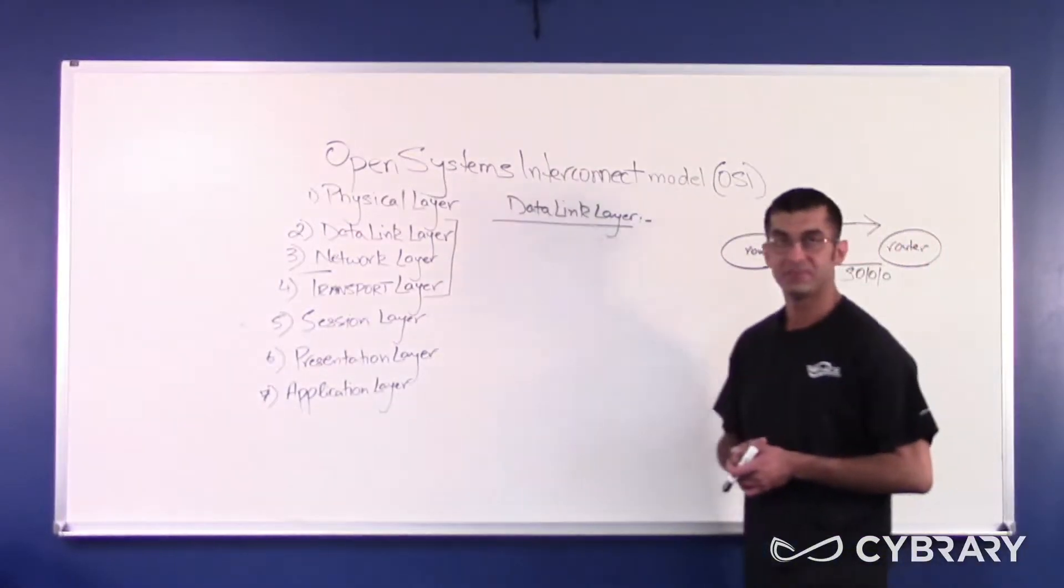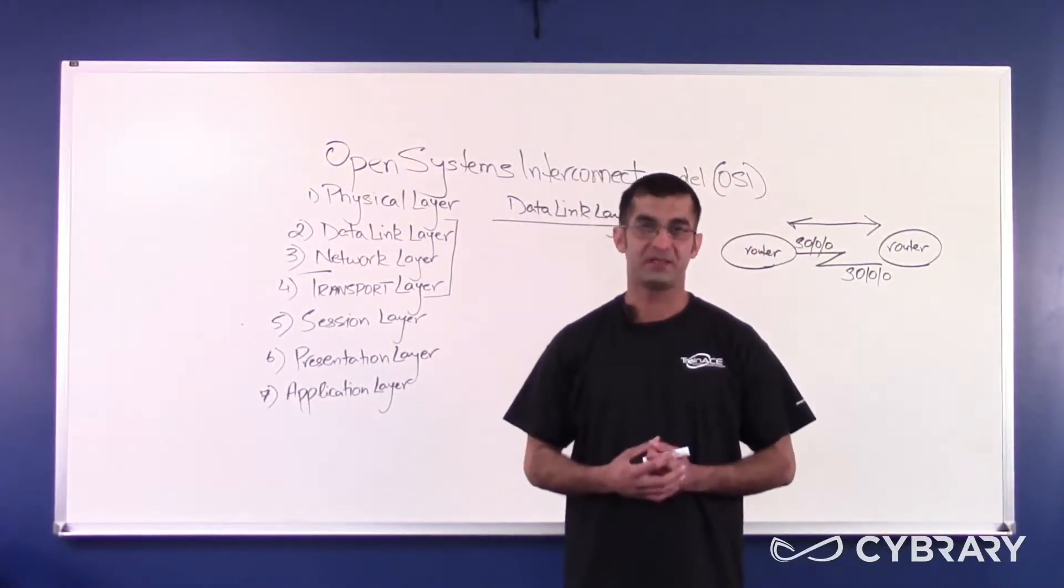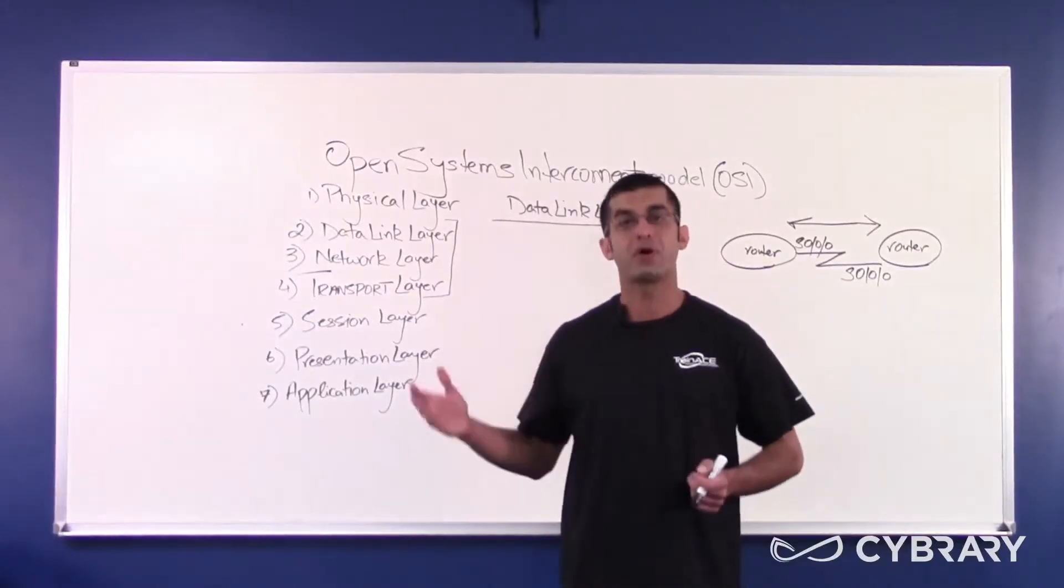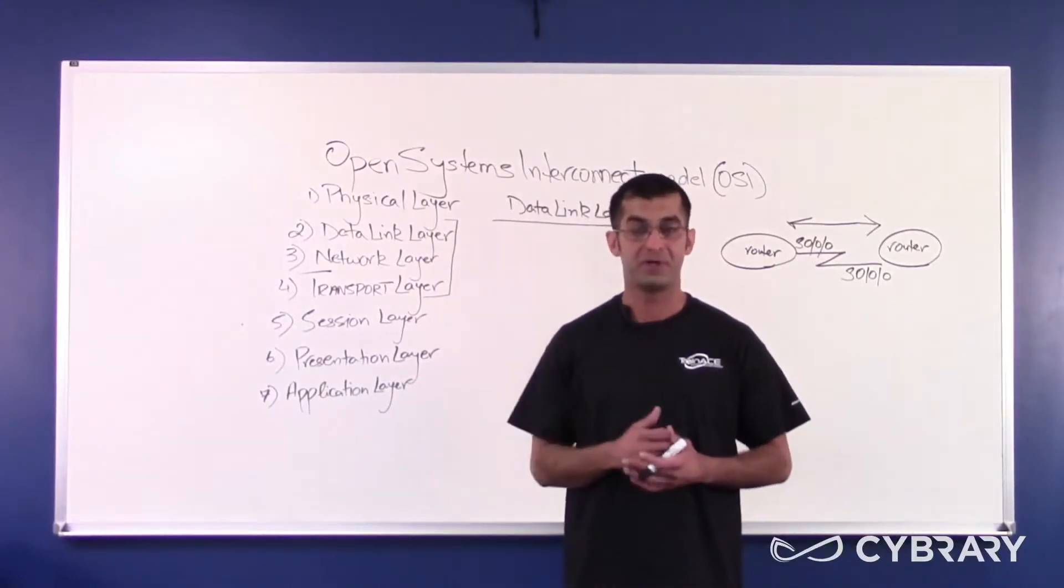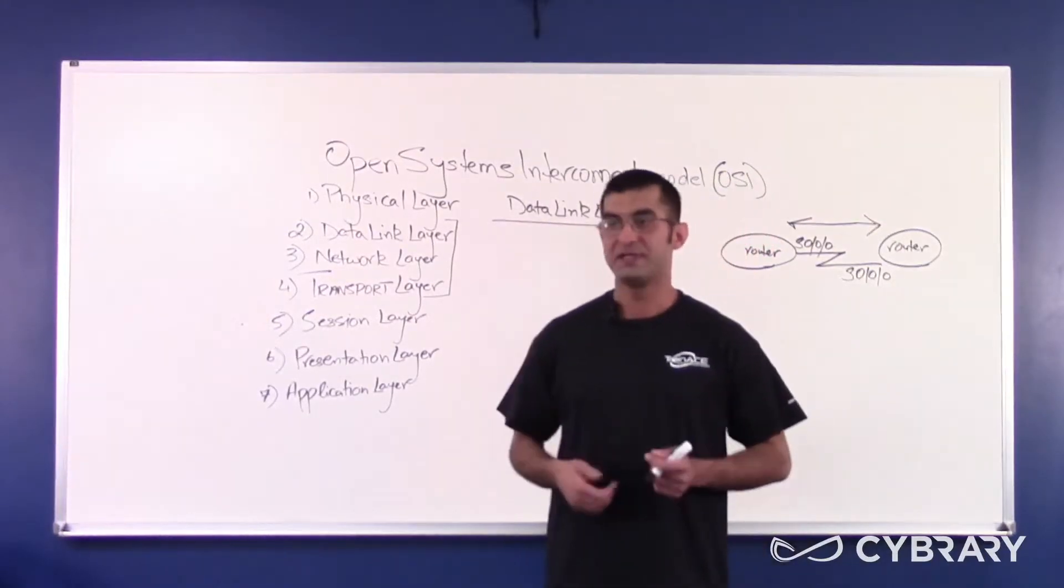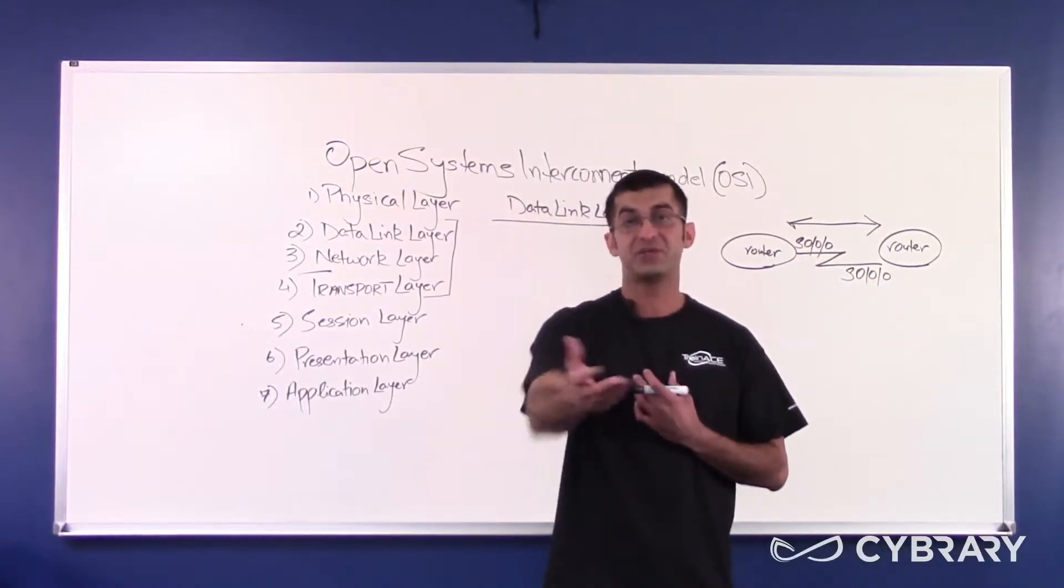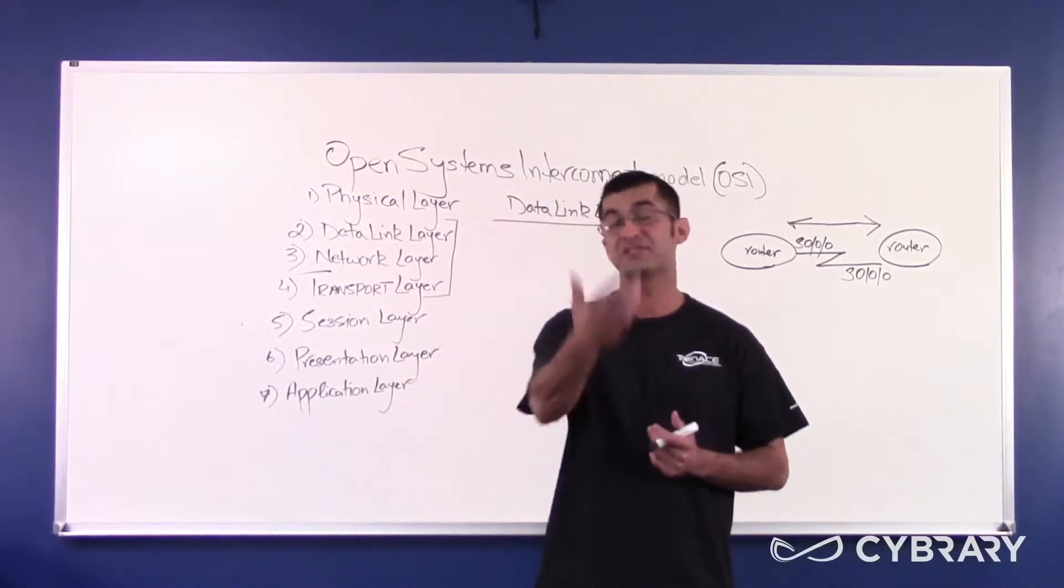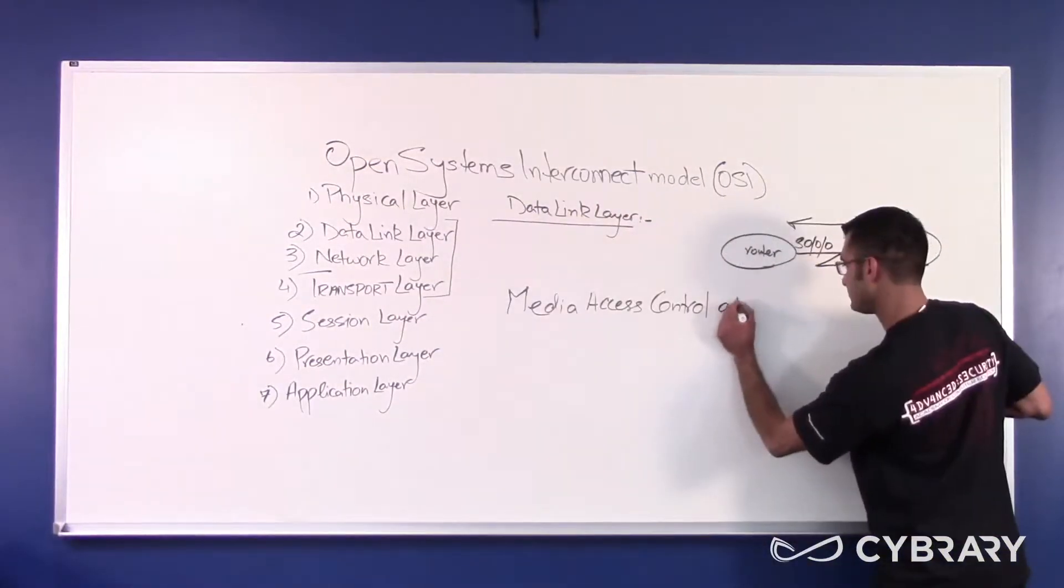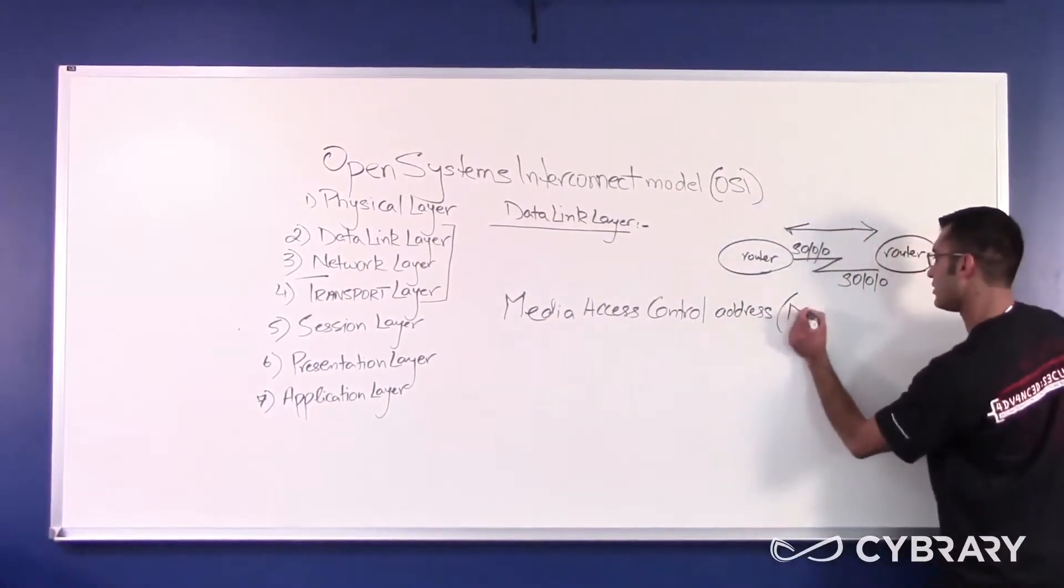In a similar manner, at layer 2 you need an addressing scheme. The data stream at layer 2 needs a source address from which the stream is sent from and a destination address which the stream is sent to. The most common of these addresses is your media access control address, or your MAC address.